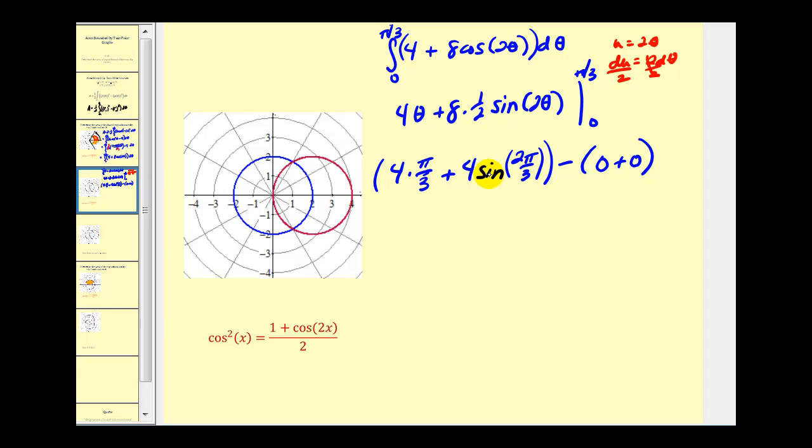Let's go ahead and sketch a quick reference triangle for two pi over three. We're going to be over here in the second quadrant. So we'll have negative one, two, square root three. So we'll have four pi over three plus four times the sine of two pi over three, which will be square root three over two. And of course minus zero. So we're going to have four pi over three plus two square root three as the area bounded by the red curve and the blue curve as we see here.